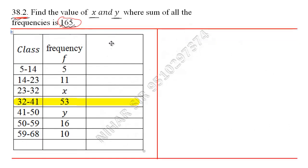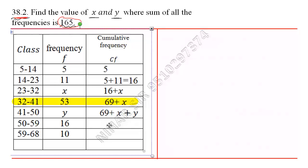Now let us find the cumulative frequency. This is 5, this is 5 plus 11 which is 16, this is 16 plus x, this is 16 plus 53 plus x which is 69 plus x, 69 plus x plus y, then 85 plus x plus y, and finally 95 plus x plus y.